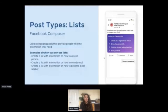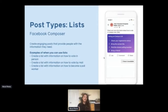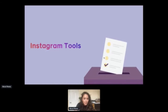There are also different post types on Facebook, and one of them is called Lists. When you go to your Facebook composer — where it says 'what's on your mind' — there's a List post type, basically a way for you to create an engaging post that provides people with the information they need. You can create this as an admin of the page. An example is 'here's the list of all the things you need when you vote on campus.' Examples of how you may use this: creating a list with information on how to vote or how to become a poll worker. These kinds of posts get a lot more engagement, so it's a really good way to get your message out as you're creating content.